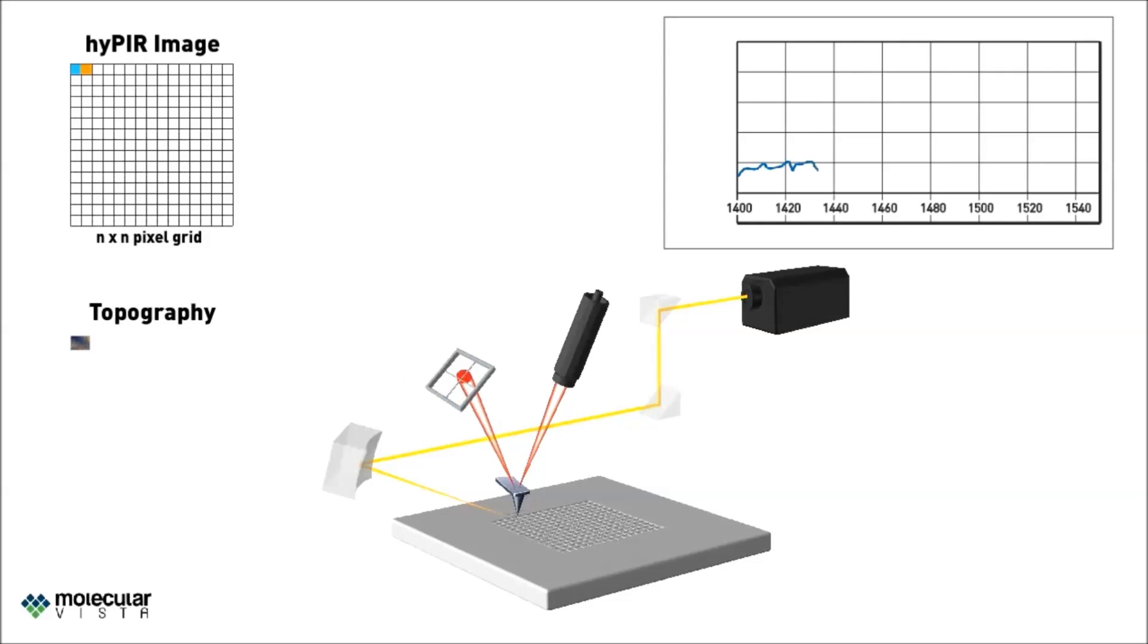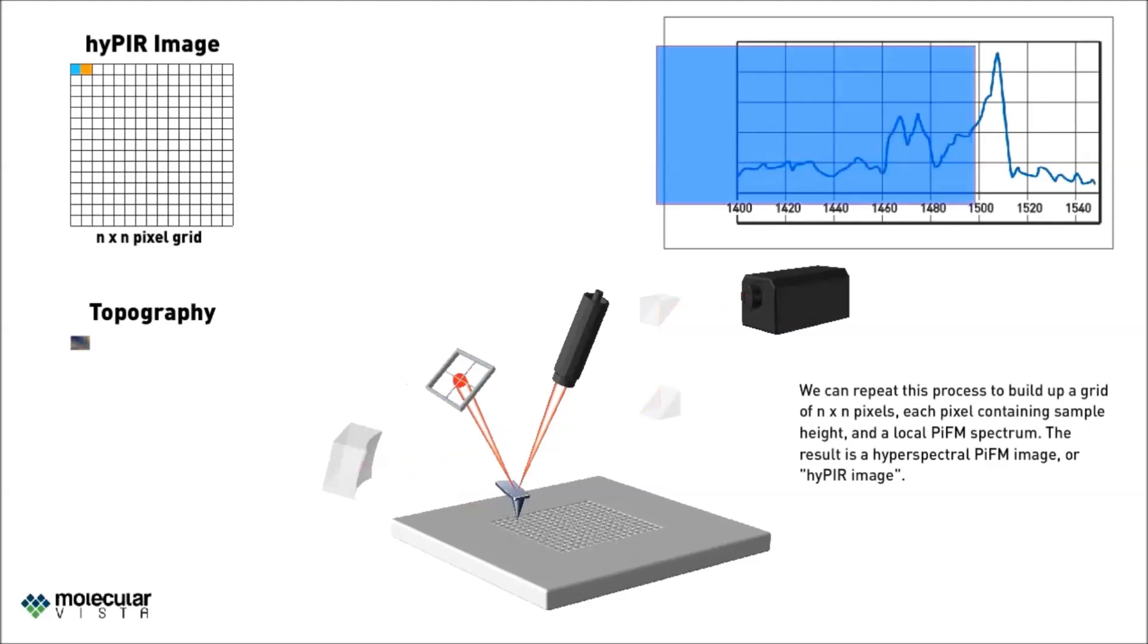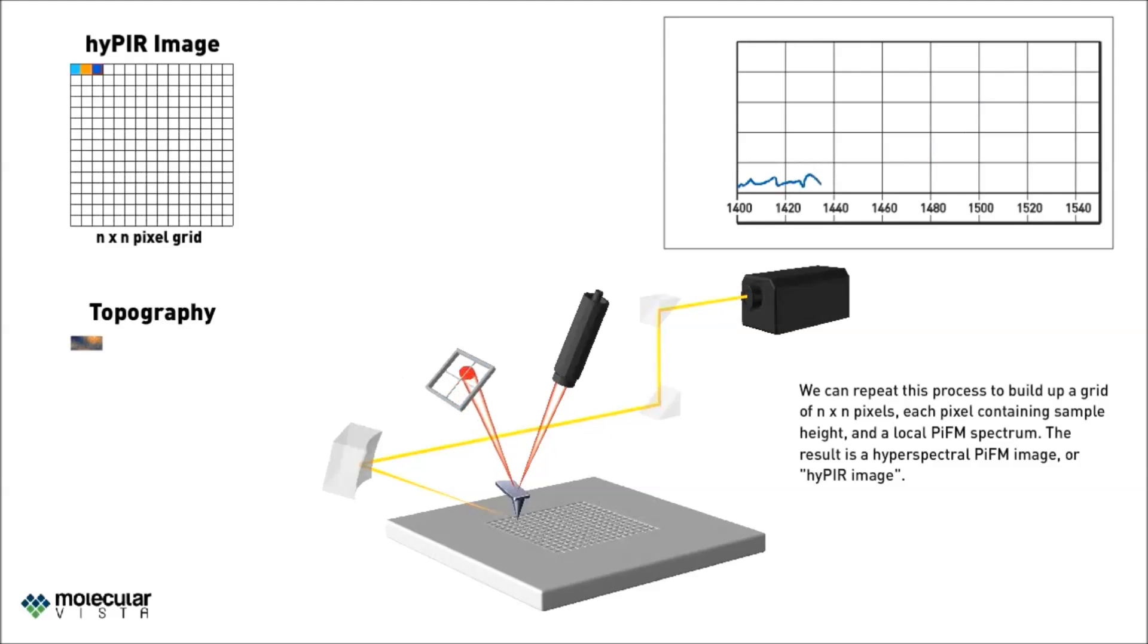We can repeat this process to build up a grid of n by n pixels, each pixel containing sample height and a local PIFM spectrum. This image, which we call a hyper-nano image, contains rich spectral or chemical information at the nanoscale.